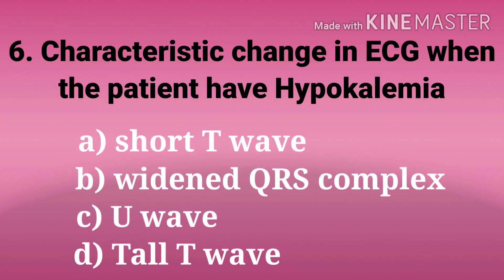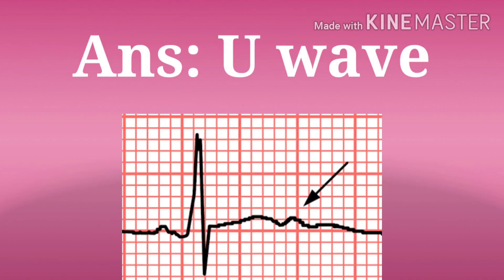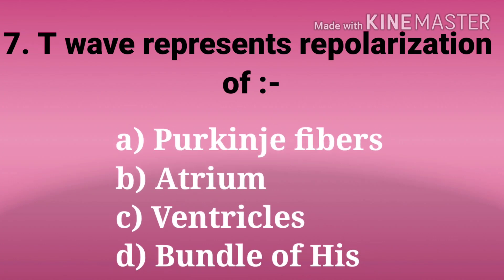Sixth question: characteristic change in ECG when a patient has hypokalemia. The options are short T-wave, widened QRS complex, U-wave, and tall T-wave. And the answer is U-wave. U-wave is seen in hypokalemia, and tall T-wave is seen in hyperkalemia.